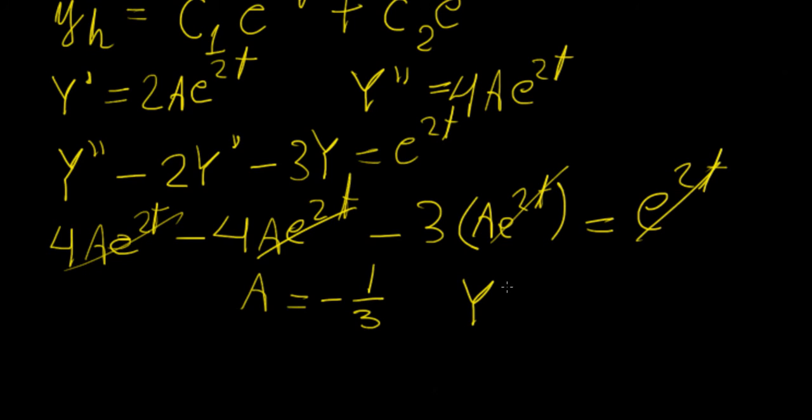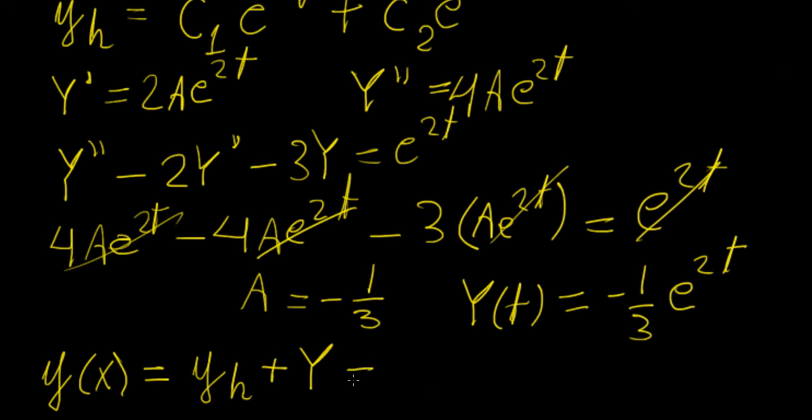That means that our function capital Y is going to be minus 1 over 3 e to the 2t. So what is our general solution for the whole equation? Well it's just going to be a superposition of the homogeneous solution plus this capital Y solution that we found, and that's going to be equal to c1 e to the minus t plus c2 e to the 3t minus 1 over 3 e to 2t.